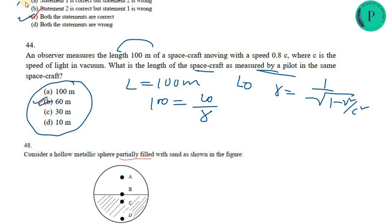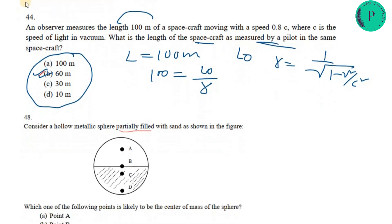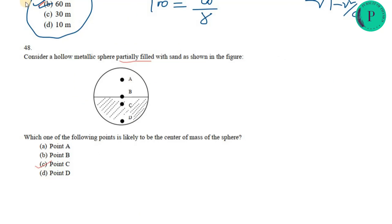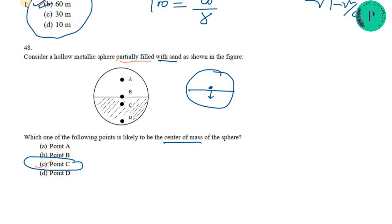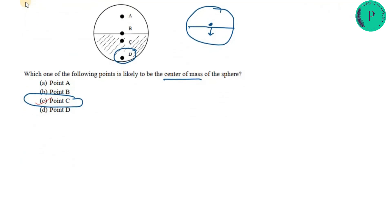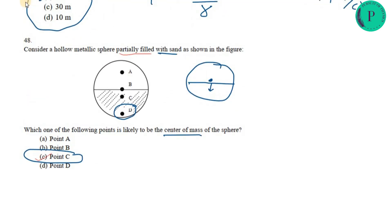The last question involves a hollow metallic sphere partially filled with sand. For a purely hollow metallic sphere, the centre of mass is at the geometric centre. When partially filled with sand, the centre of mass shifts downward. Point C is the most suitable answer, as point D — at the very bottom — is not correct. In the next video we will discuss electromagnetism. Thanks for watching.